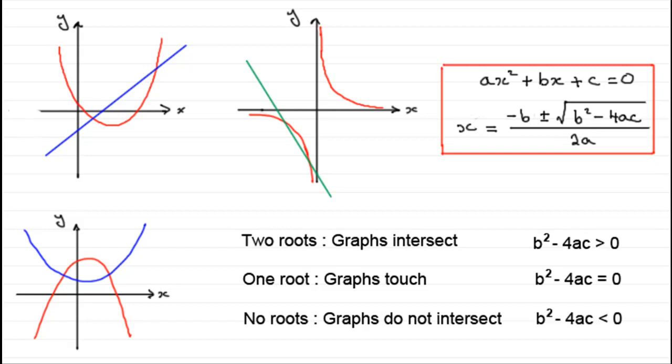And finally, if they don't touch, b² - 4ac is less than zero, a negative number in the square root. So, when you try to square root a negative number, you'd find you'd get an error on your calculator.